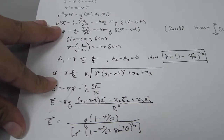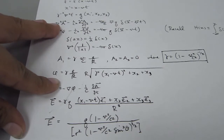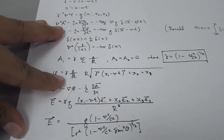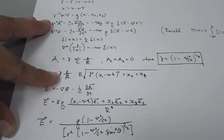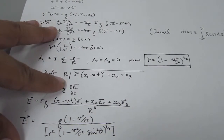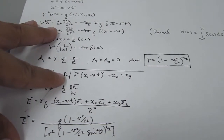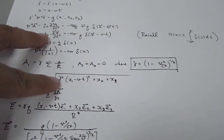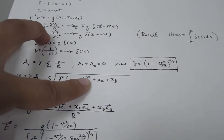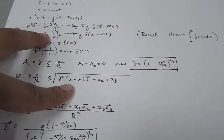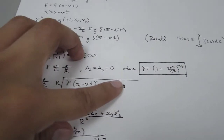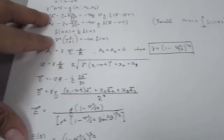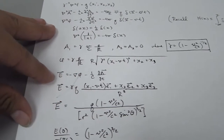Recall that this was the potential, but now it is also Lorentz contracted. r equals the first coordinate that's Lorentz contracted, plus x2 plus x3 — and these are generalized coordinates.